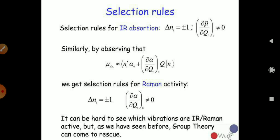Similarly, for Raman activity, the polarizability matrix element gives: Δnᵢ = ±1, and the condition is (∂α/∂qᵢ)₀ ≠ 0. It can be difficult to determine which vibrations are IR and Raman active, but group theory is helpful for identifying Raman or IR active modes. This concludes the selection rules for IR and Raman active compounds. Thank you very much.